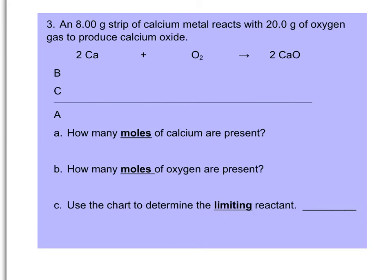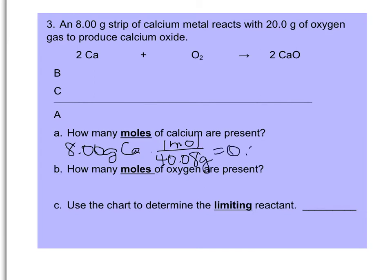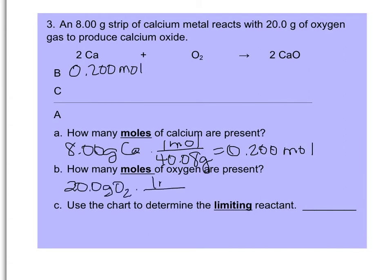Here's another example — a more common type — which is problem 3 on your worksheet. The difference here is that we start with gram amounts of both reactants, so we have extra steps. We must convert from grams to moles before finding the limiting reactant. We have 8 grams of calcium: dividing by the molar mass of 40.08 g/mol gives 0.2 moles. Then 20 grams of O₂, with a molar mass of 32 g/mol, gives 0.625 moles of oxygen.